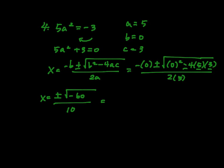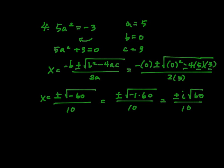Let's take that negative 60 and split it up with the negative 1 and 60. So that becomes plus or minus i times the square root of 60 over 10.